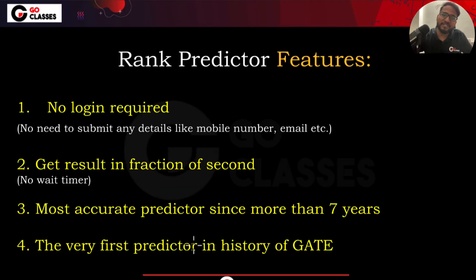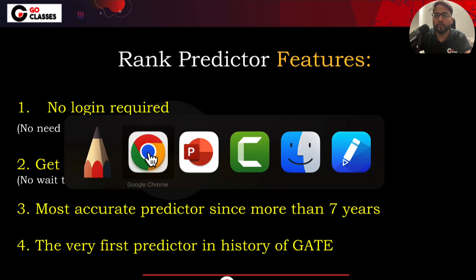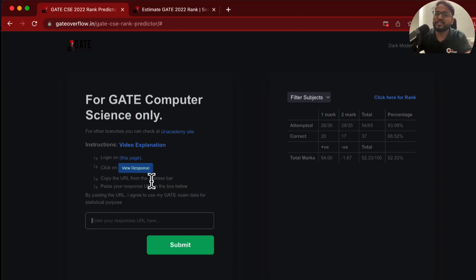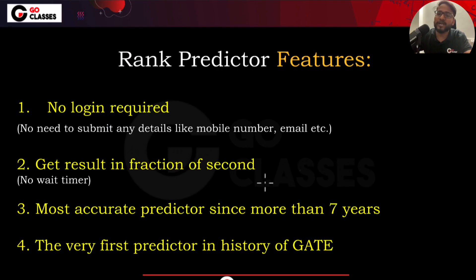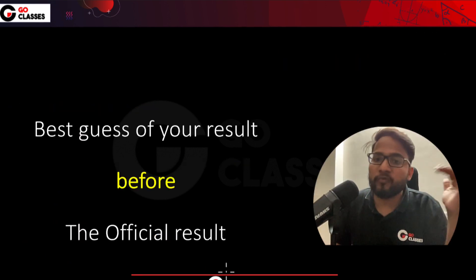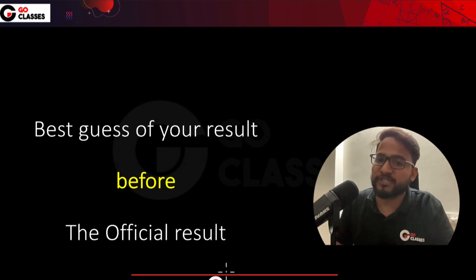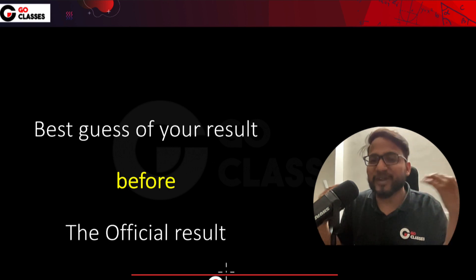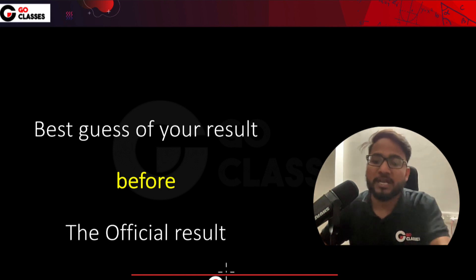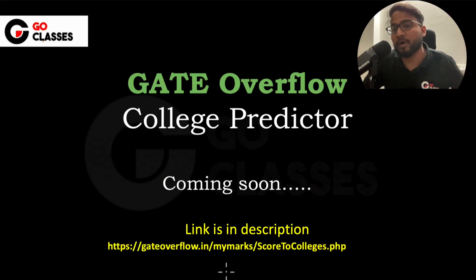To recap the key features: no login required, you just paste your URL and get your result in a fraction of a second, it is the most accurate predictor, and it was the very first predictor in the history of GATE. Using the Gate Overflow predictor you can best guess your result before the official result so you can plan future things. Not just the rank — you can also predict which college you will get with this rank.